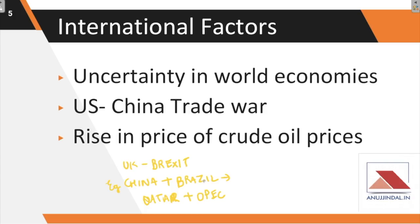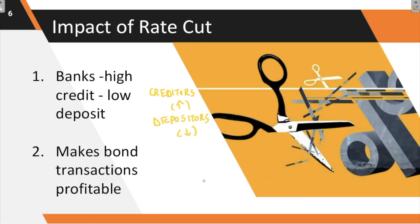The US-China trade war between these two superpowers is going to affect other economies as well, and was a major reason why RBI felt the need to infuse money into the market — so consumer demand for goods increases and the economy can grow. Additionally, rising crude oil prices due to the ongoing conflict between Qatar and OPEC are expected to push oil prices higher, which could affect inflation and demand for other goods.